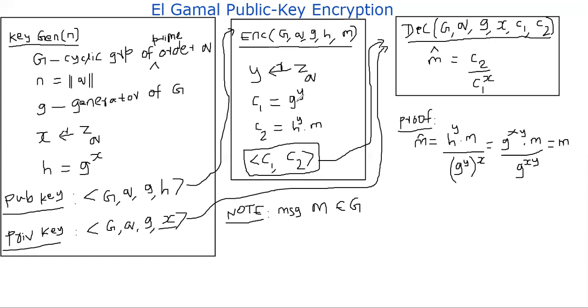How does the key generation algorithm work? It takes n as an input. What is n? n is the security parameter. For example, in this case, n is the order of the cyclic group size.